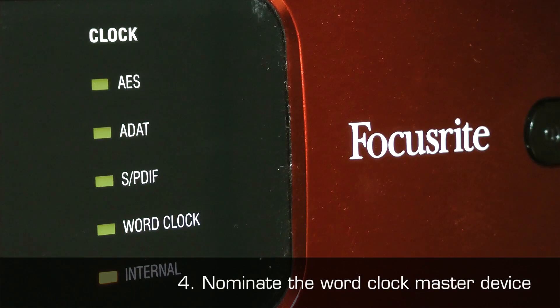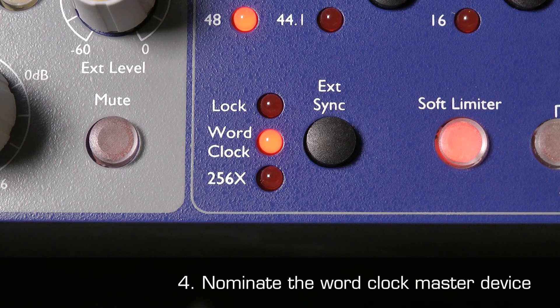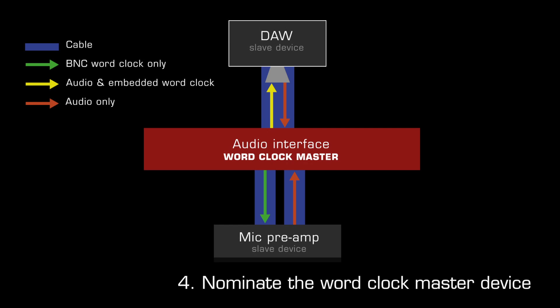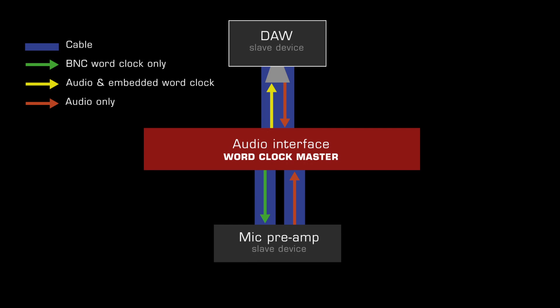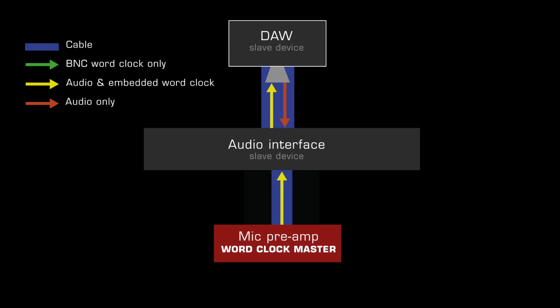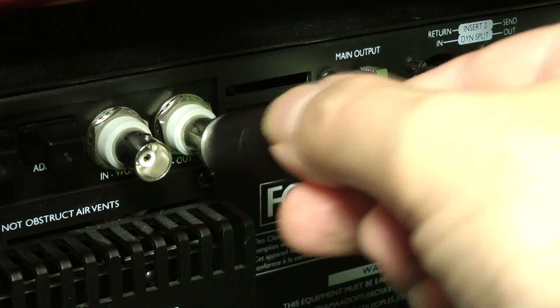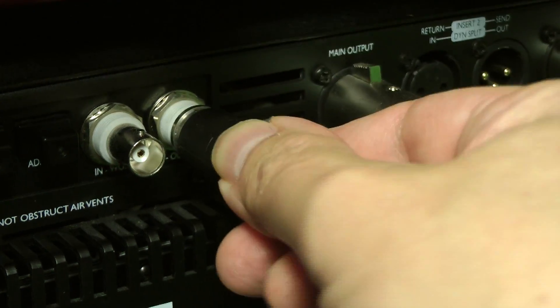Four, nominate the device which will operate as the word clock master — either the audio interface or the mic pre-voice channel. If the mic pre-voice channel does not have either word clock or digital in, you will have to set it as the word clock master.